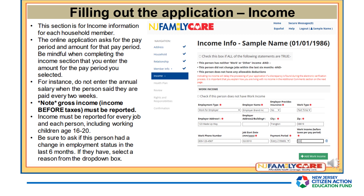The Income section is for income information for each household member. The online application asks for the pay period and the amount for that pay period — be mindful that you enter the amount for the pay period you selected. Please note that gross income, meaning income before taxes, must be reported. Income must be reported for every job and each person, including working children aged 16 to 20.